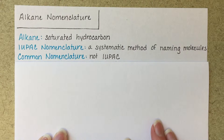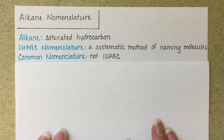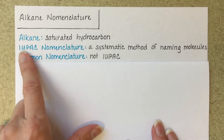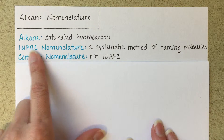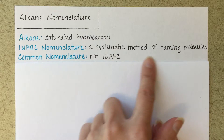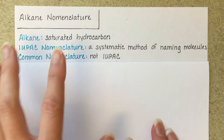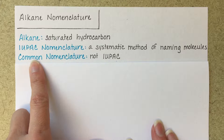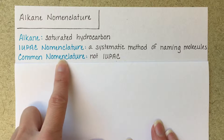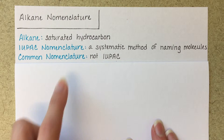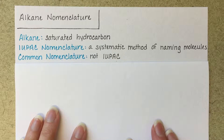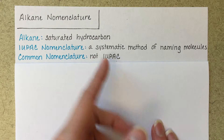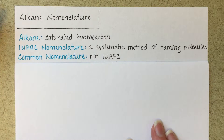Throughout the year, we're going to learn two different types of nomenclature, two different methods. One is called IUPAC, which is a systematic method — it has rules that you follow, and it's pretty easy to learn. And then also we're going to occasionally learn common nomenclature, which is just not systematic, and that just involves memorizing.